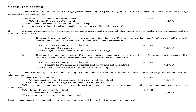In the third case, record the journal entry for scrap common to various jobs at the time the scrap is returned to the storeroom: debit materials control, and credit manufacturing department overhead control, to record the value of scrap returned to the storeroom. When the scrap is reused as direct materials on a subsequent job, debit work in process and credit materials control, to record the reuse of scrap on a job.